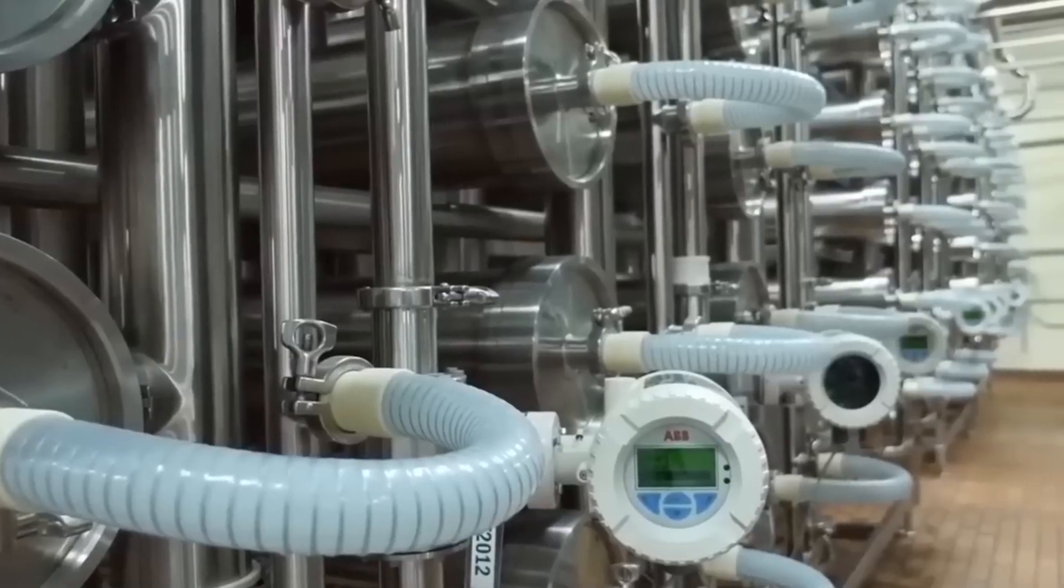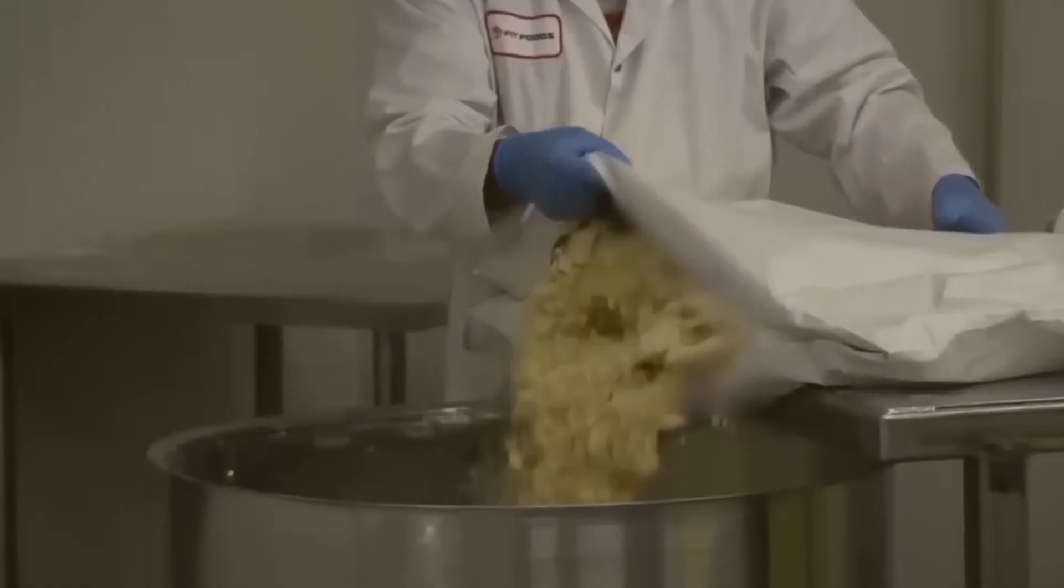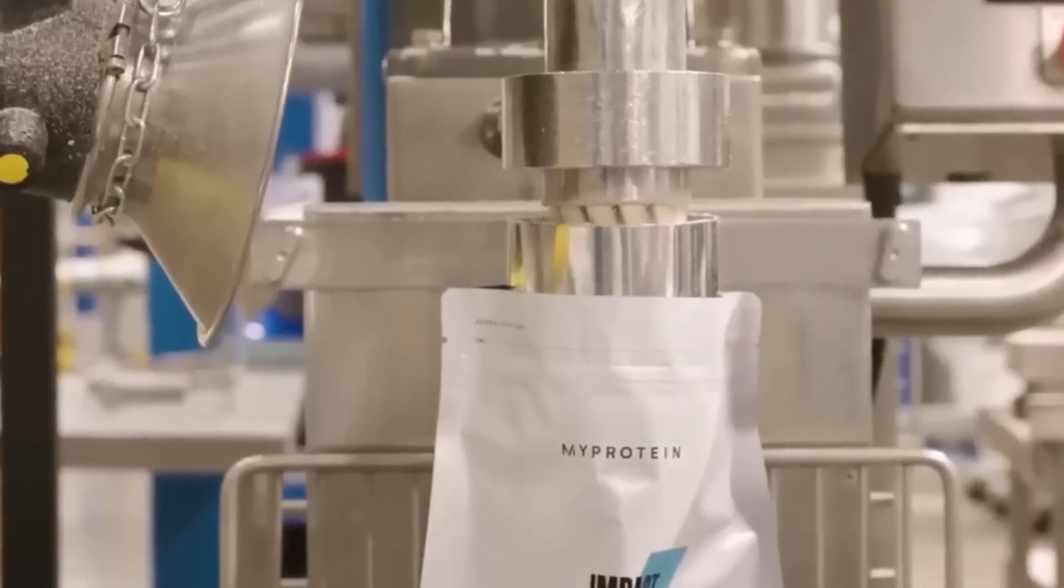The milk gets pasteurized, goodbye bacteria, and then something incredible happens. They add a special ingredient called a coagulant, which basically tells the milk it's time to split up. Like a dairy divorce, the milk separates into curds, hello future cheese, and our star of the show, liquid whey.